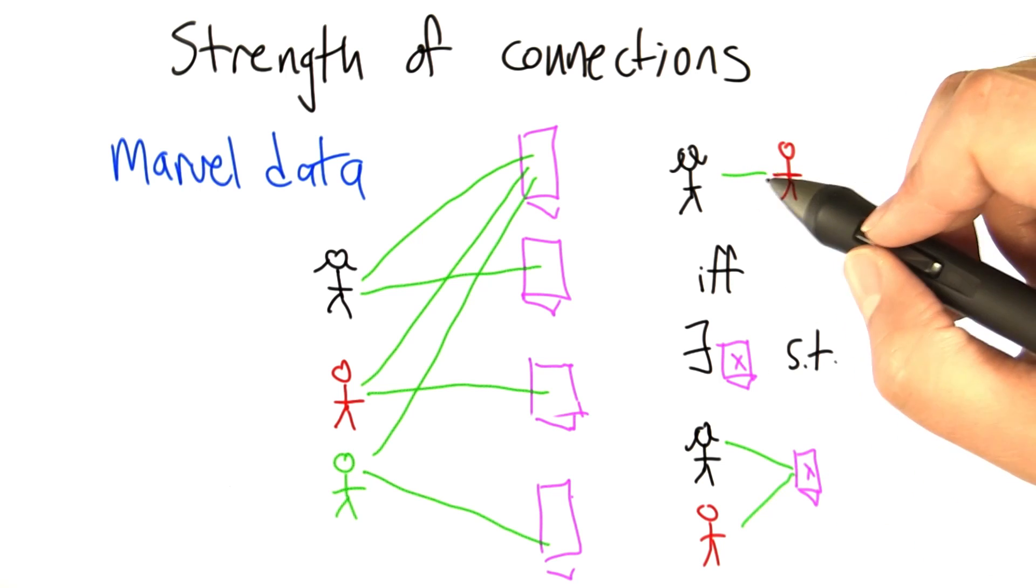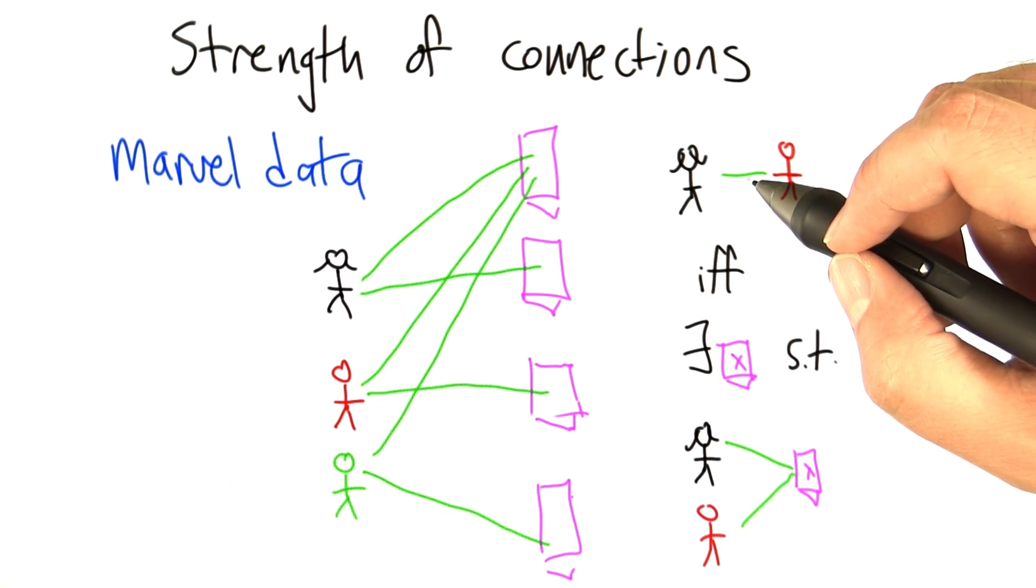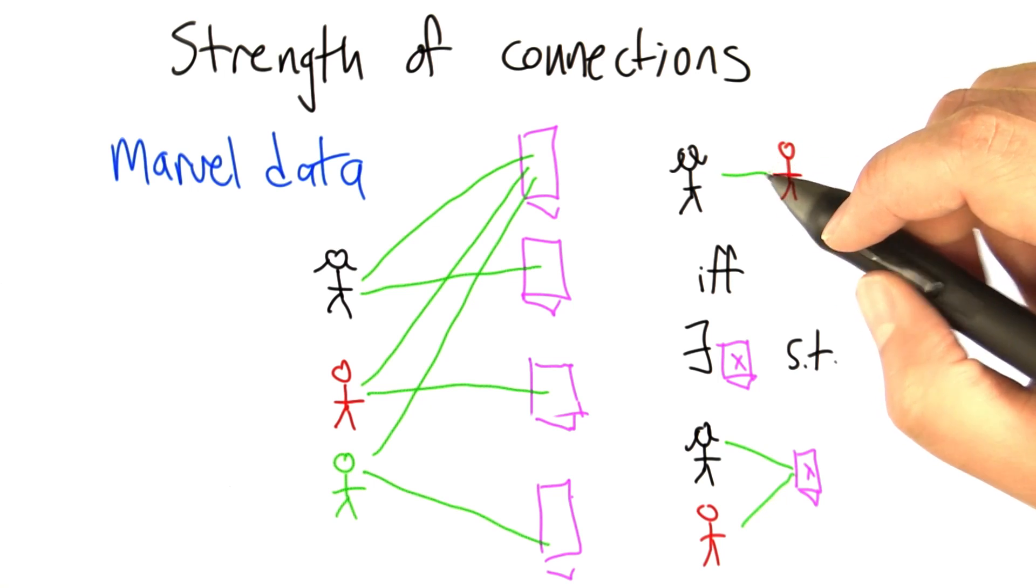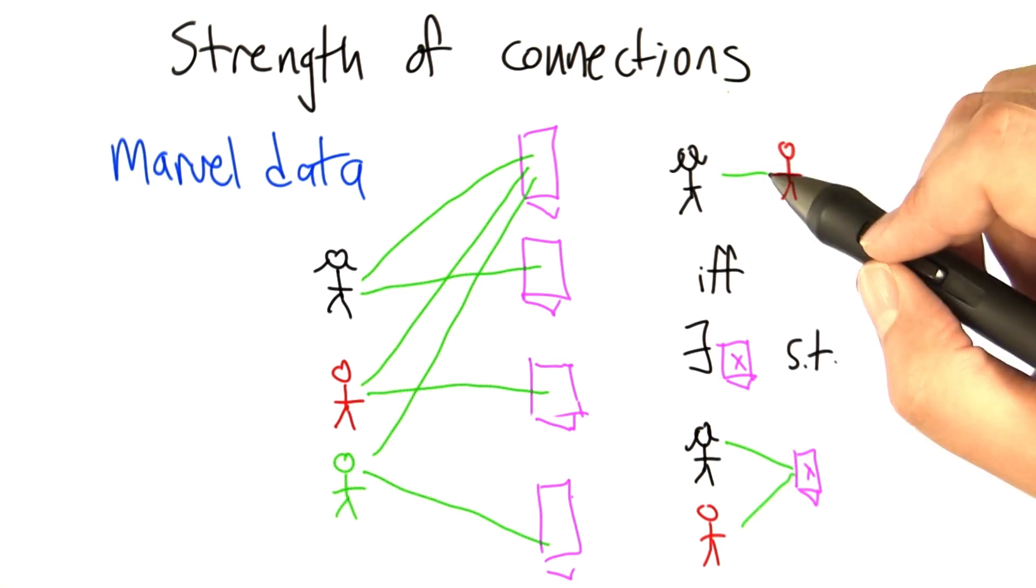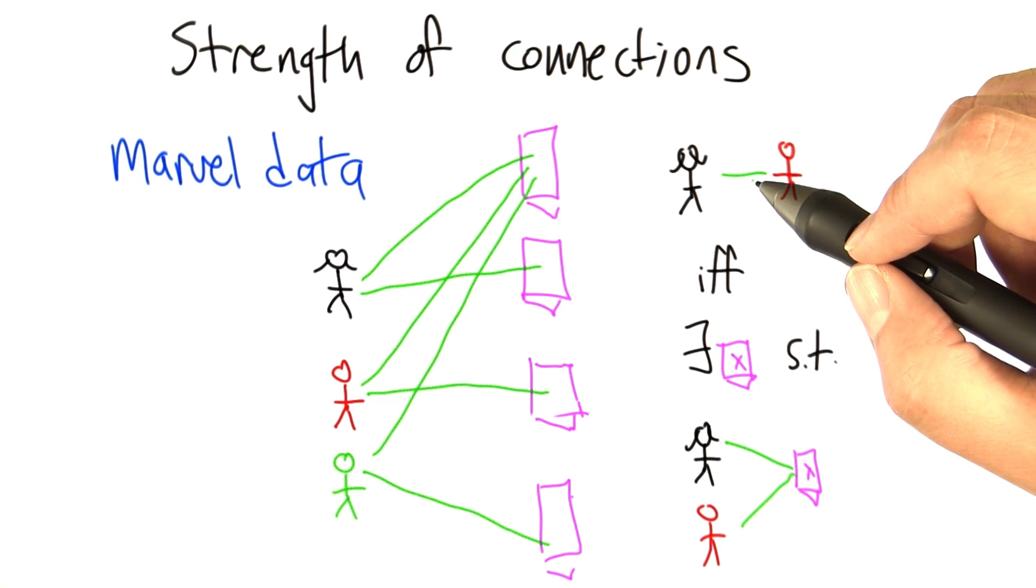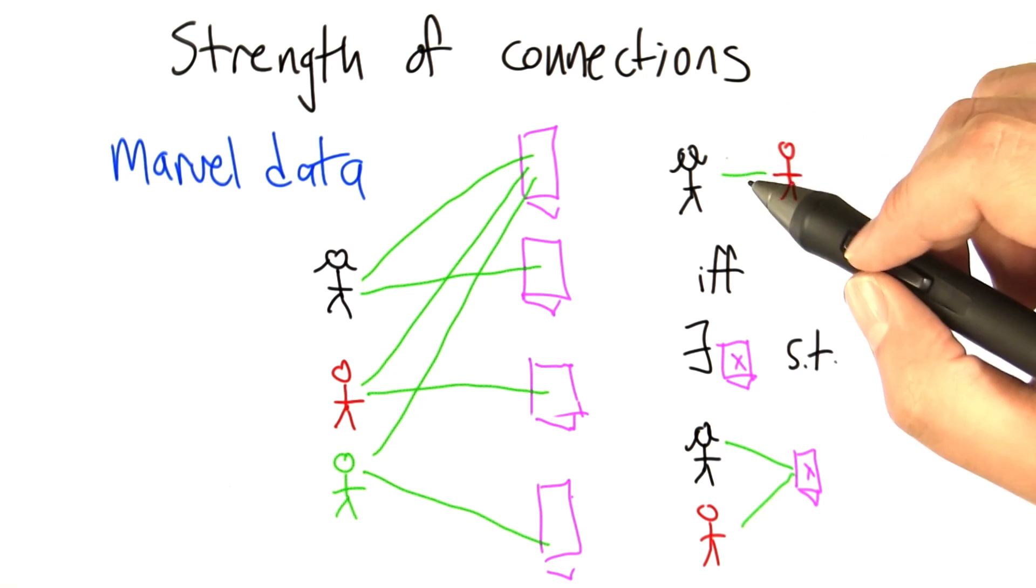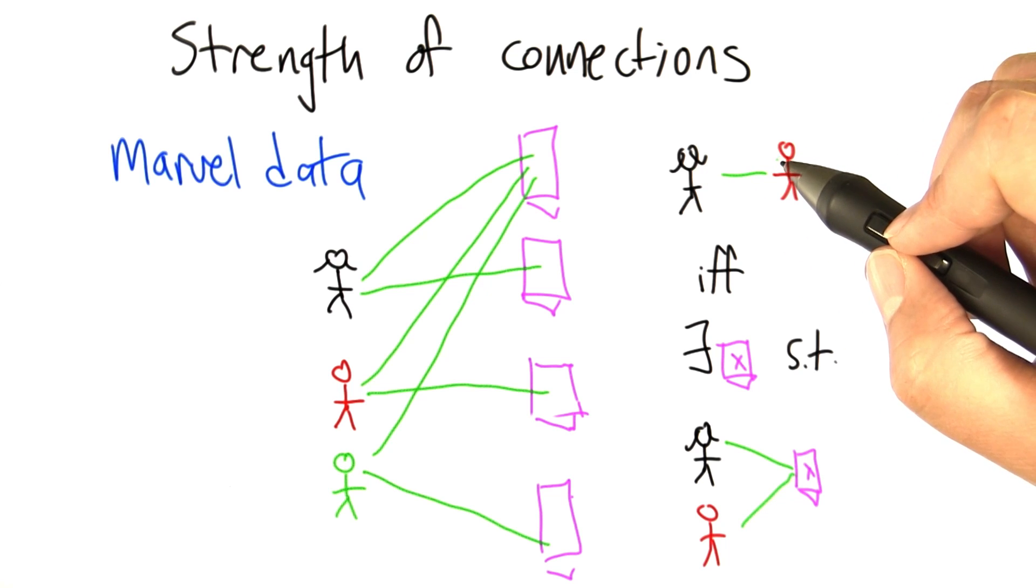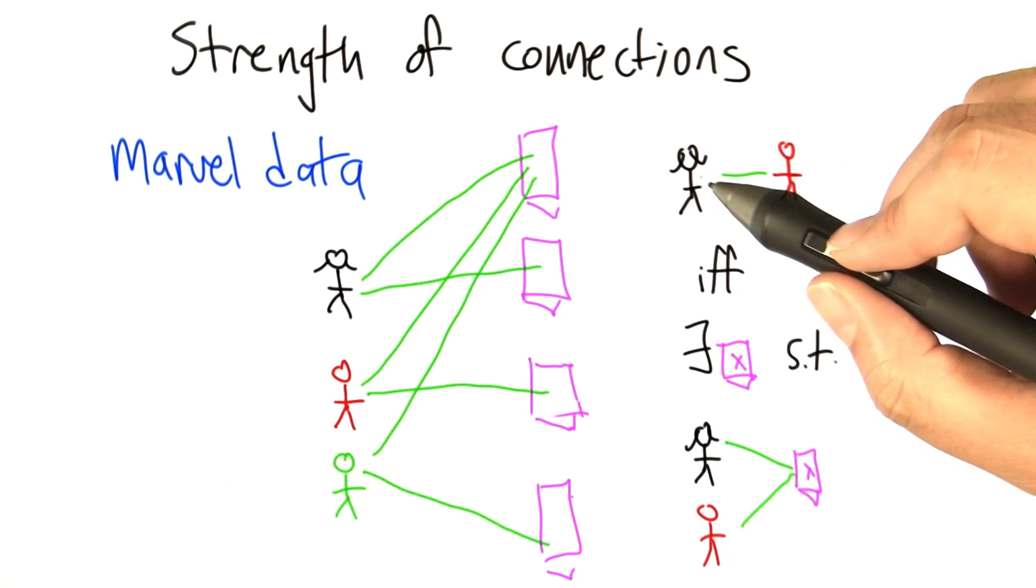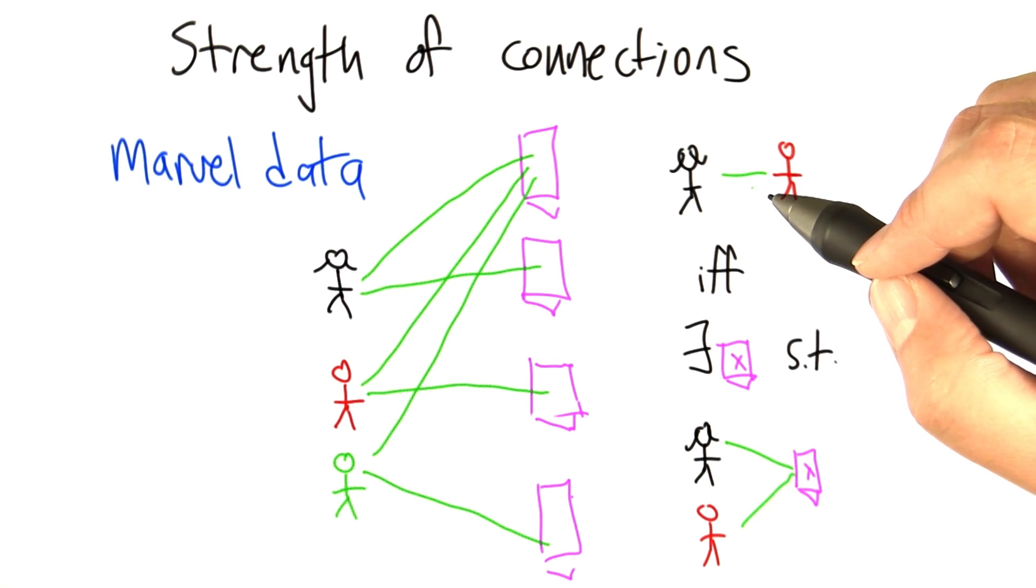Now, this edge appeared as long as there was at least one book they had in common, even if that book had a zillion comic book characters in it and it was the only book that they were in together, as opposed to two comic book characters that appear together very often. They would also just get a link between them, and that doesn't seem quite right.